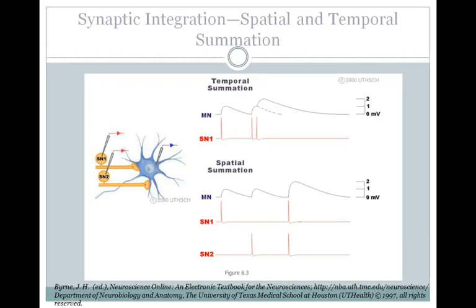Now that you understand the changes on the postsynaptic membrane due to neurotransmitter release, let's talk about how the cell decides whether to fire an action potential or not. Each cell receives thousands of synapses, all producing very small changes in membrane potential that must be summed to either reach threshold or remain below it. There are two main mechanisms of summation. There's temporal summation: if you stimulate the same neuron twice in quick succession, the membrane potential from the first stimulus hasn't returned to rest, so the second stimulus adds additional ion movement and increases the membrane voltage further.